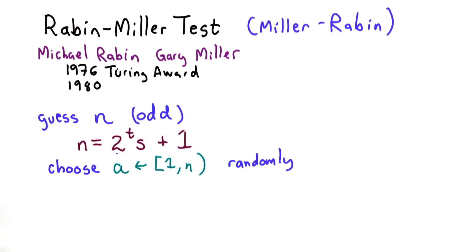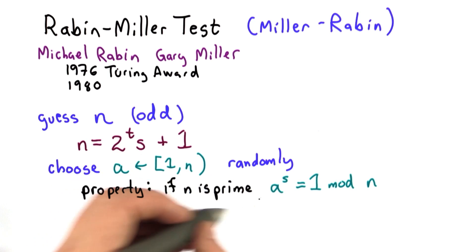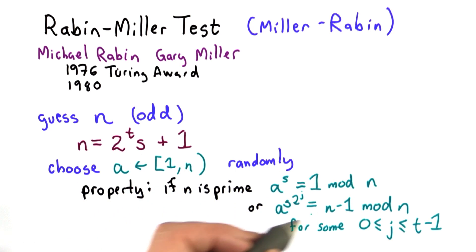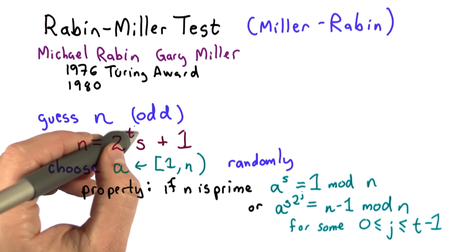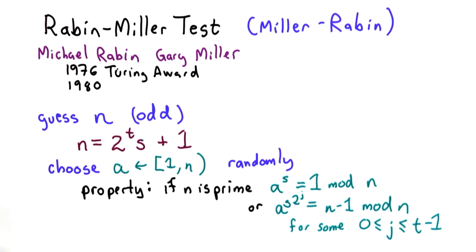Next, we're going to choose some random a value in this range from 1 to n minus 1. If n is prime, we know that either a to the s is equal to 1 mod n, or we know that a to the s times 2 to the j is equal to n minus 1 mod n for some j. And the j values are in the range from 0 to t minus 1, which is the power here.